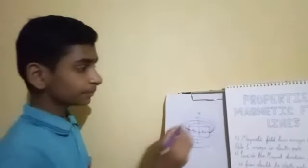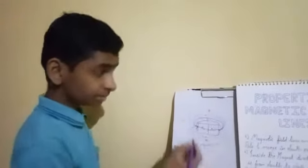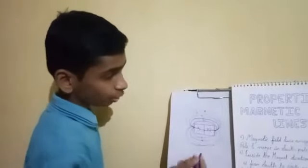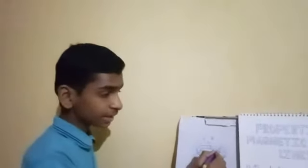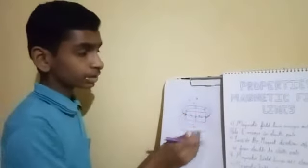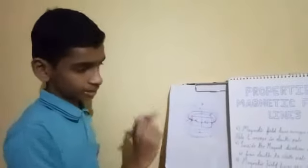If we keep an object here and name it as object 1 and object 2 here, the force of attraction between the object and the magnet will be more as compared to the object 1.